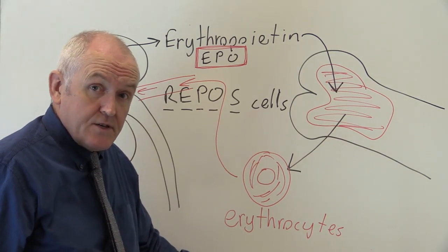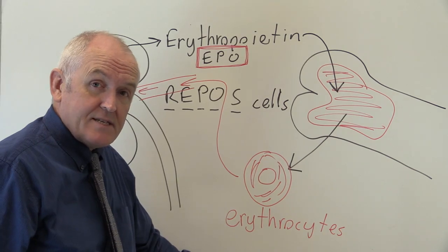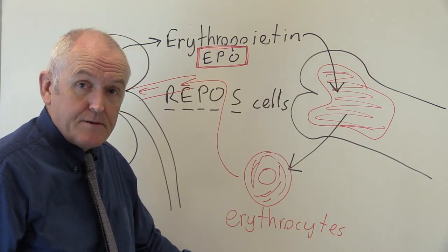So there we are, another function of the kidney, controlling red cell mass and the amount of oxygen carried by the blood.